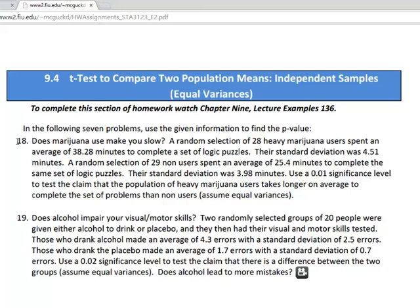Alright, so in this video we're just going to focus on the test statistic for question 18. This problem involves marijuana users and non-users and they're looking at the time it takes for them to complete a set of logic puzzles. They also tell us that we're to assume equal variances here. So let's look at the data for the problem.